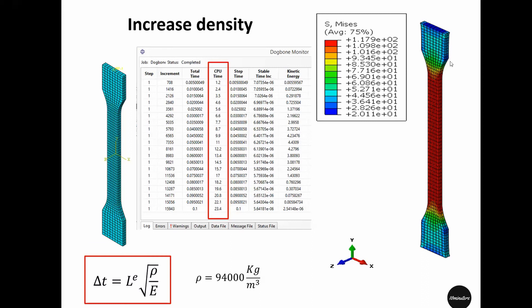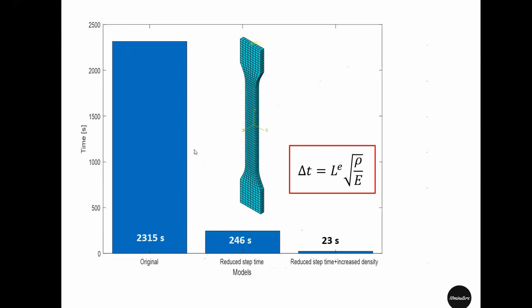But we have made a significant gain in our simulation time. The original one took 2,300 seconds. When you reduced the step time from one second to 0.1 second, it took 246 seconds. But when on top of reduction on step time we increased the density, the simulation ran only in 23 seconds.